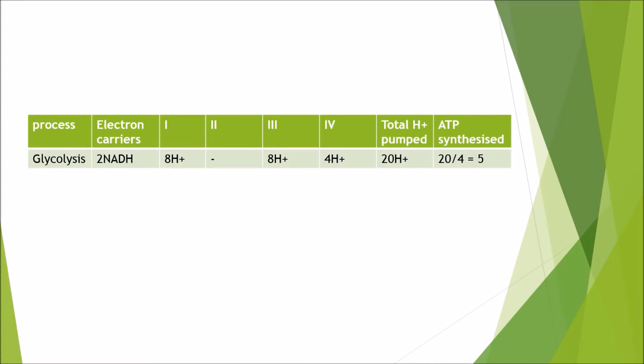Now we're just going to make a table of all the electron carriers and the hydrogen ions and ATPs produced. If we go back to the first presentation, which was about glycolysis, we know that two NADH molecules were produced. In complex 1, for every NADH molecule that goes through, four hydrogen ions are pumped. So if we've got two NADHs, that means a total of eight hydrogen ions are pumped. We then skip complex 2. We then go to complex 3, again, four for every NADH molecule, so we get a total of eight. Then in complex 4, we only get two per NADH, which means we get four hydrogen ions. So the total hydrogen ions pumped from the carriers produced from glycolysis is 20 hydrogen ions. If we do 20 divided by 4, that means we get five ATP molecules produced by the electron carriers from glycolysis.